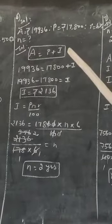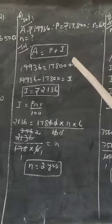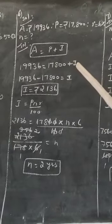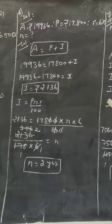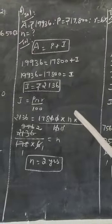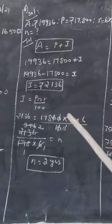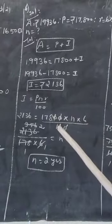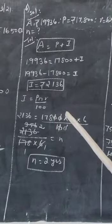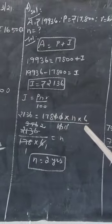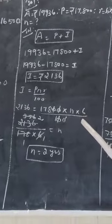We need to find n, where n means time. Using A = P + I and substituting the values of A and P, we get I = 2136. Next, we use the simple interest formula I = PNR divided by 100, substituting the values of P, r, and I to find n.